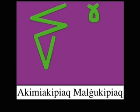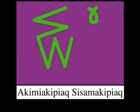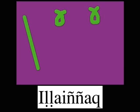The 340th number is akimiya kipiak malaguqi kipiak, 15 times 20 plus two times 20. The 360th number is ekimiakipiak pingasukipiak, 15 times 20 plus three times 20. The 380th number is ekimiakipiak sisimakipiak, 15 times 20 plus four times 20. The 400th number is ilaynyak, shown with the numeral 1 to the left of two numerals for zero — similar to 100 in Arabic, but instead of 10 times 10, it is 20 times 20.